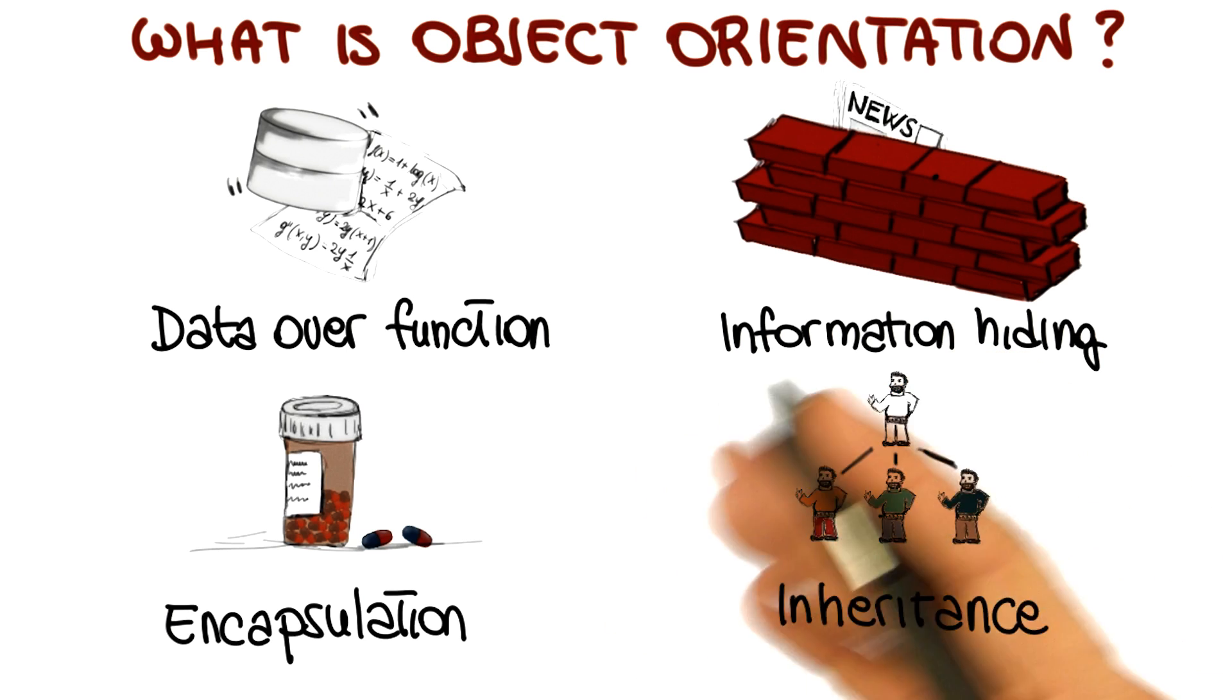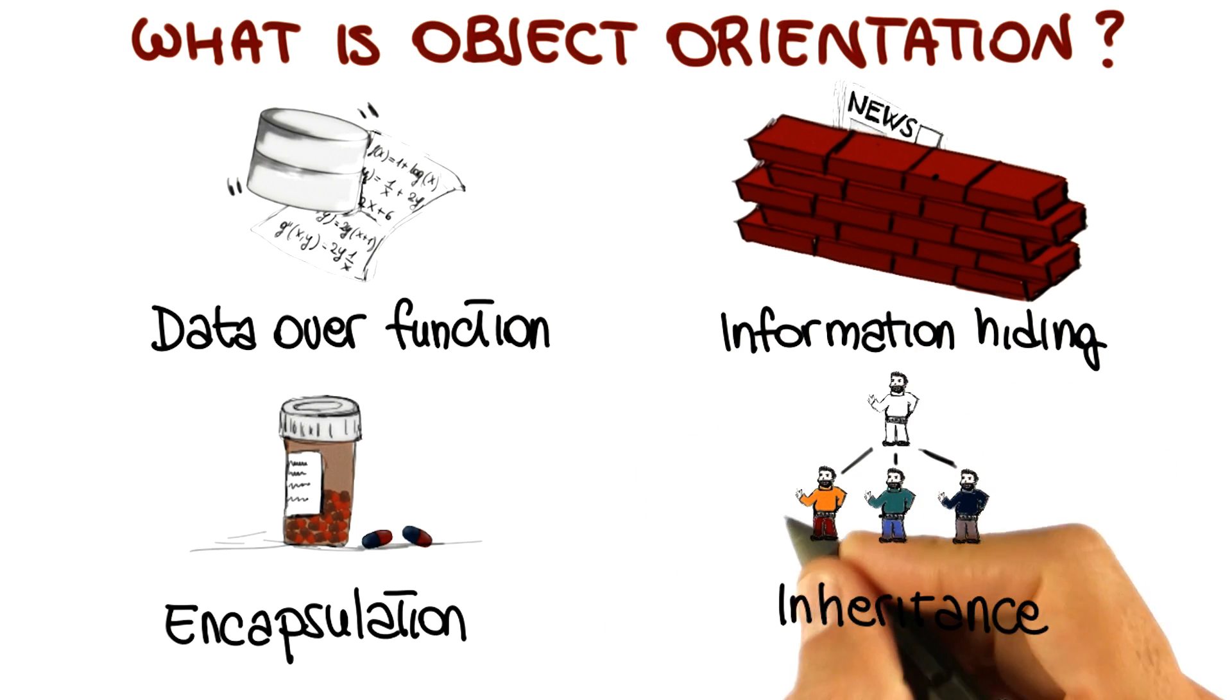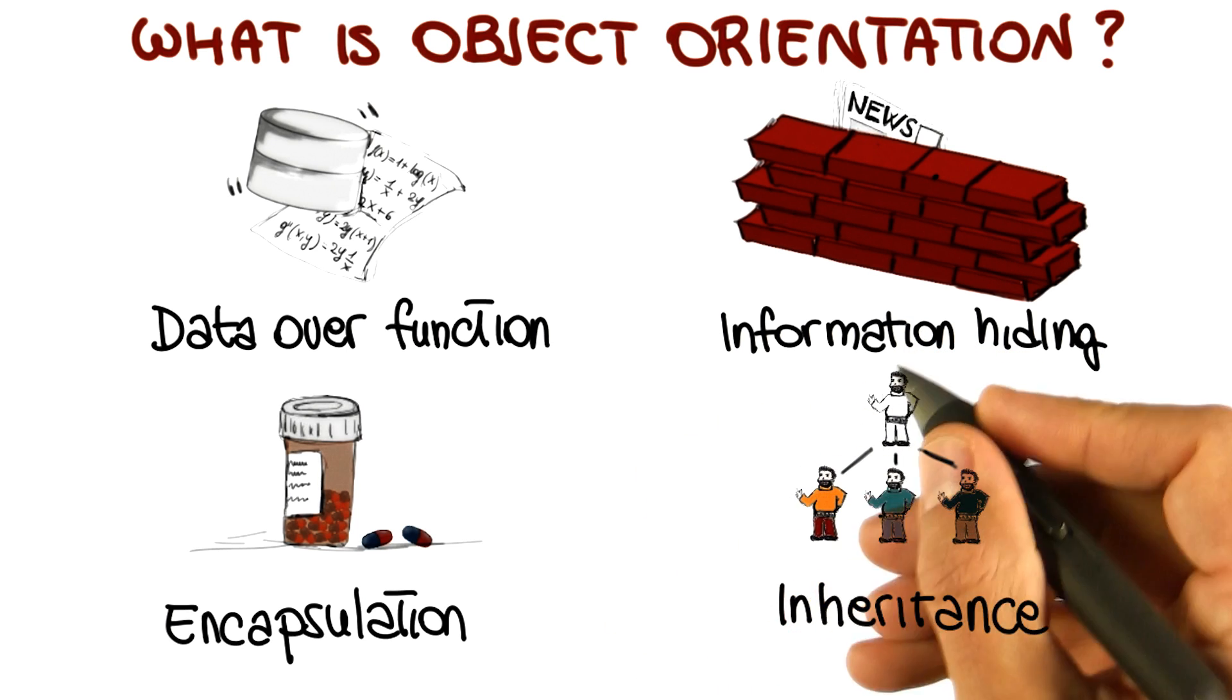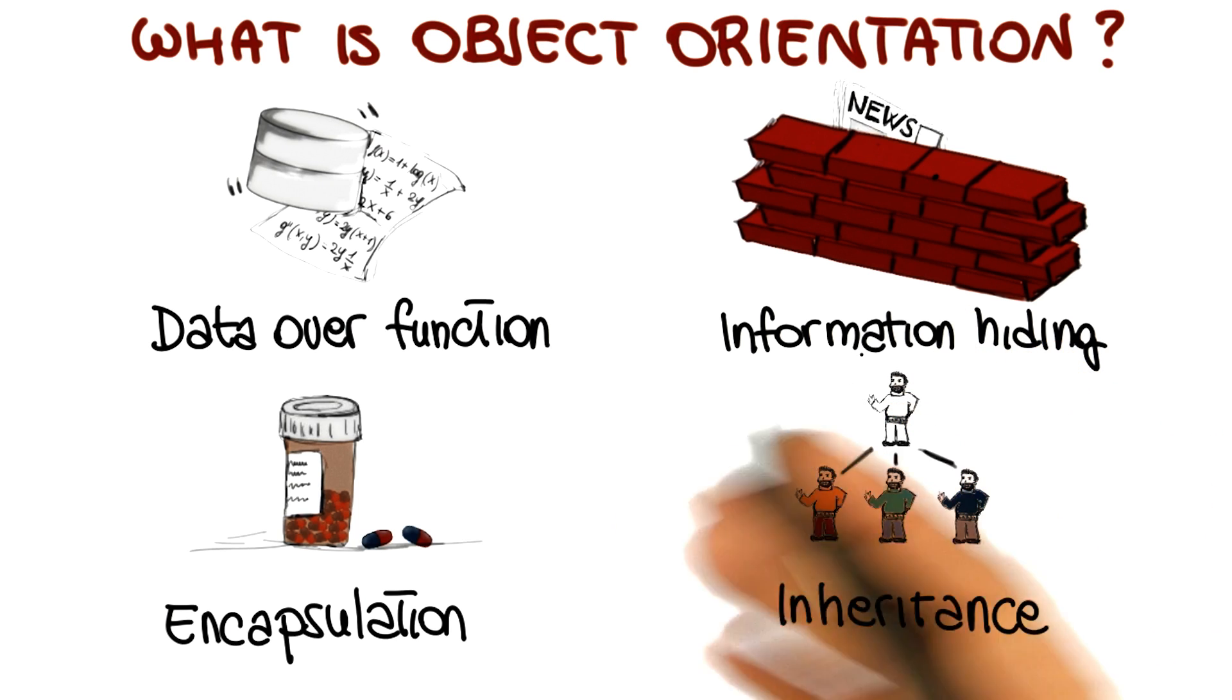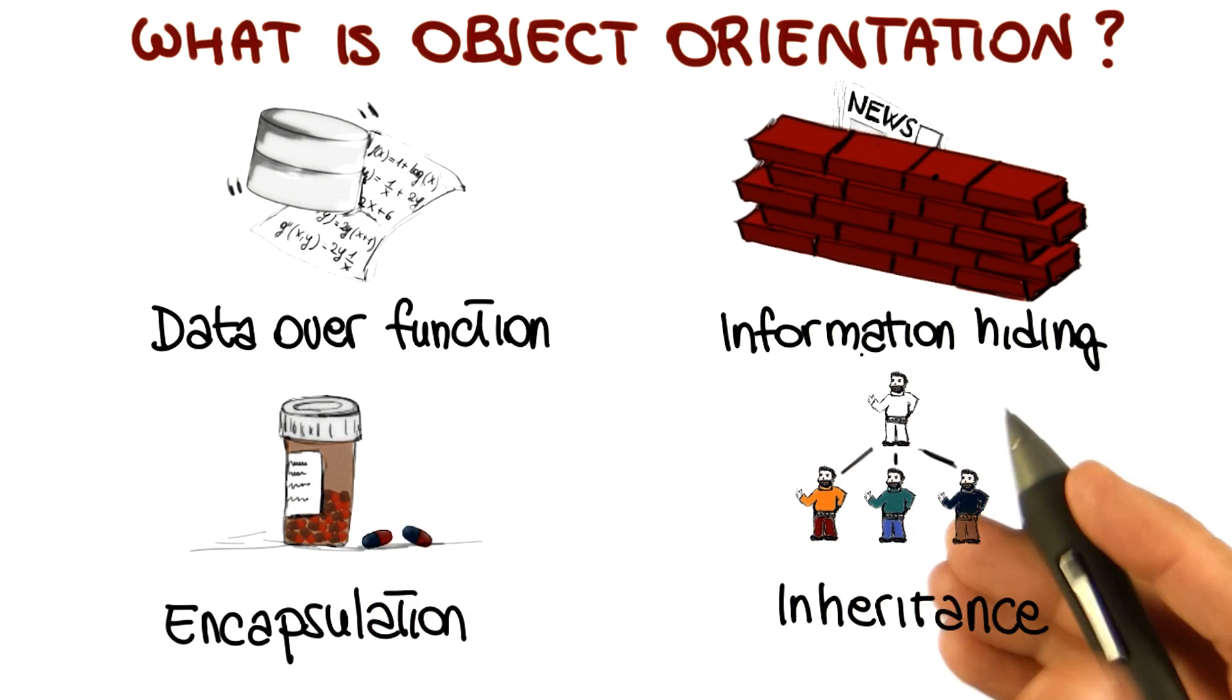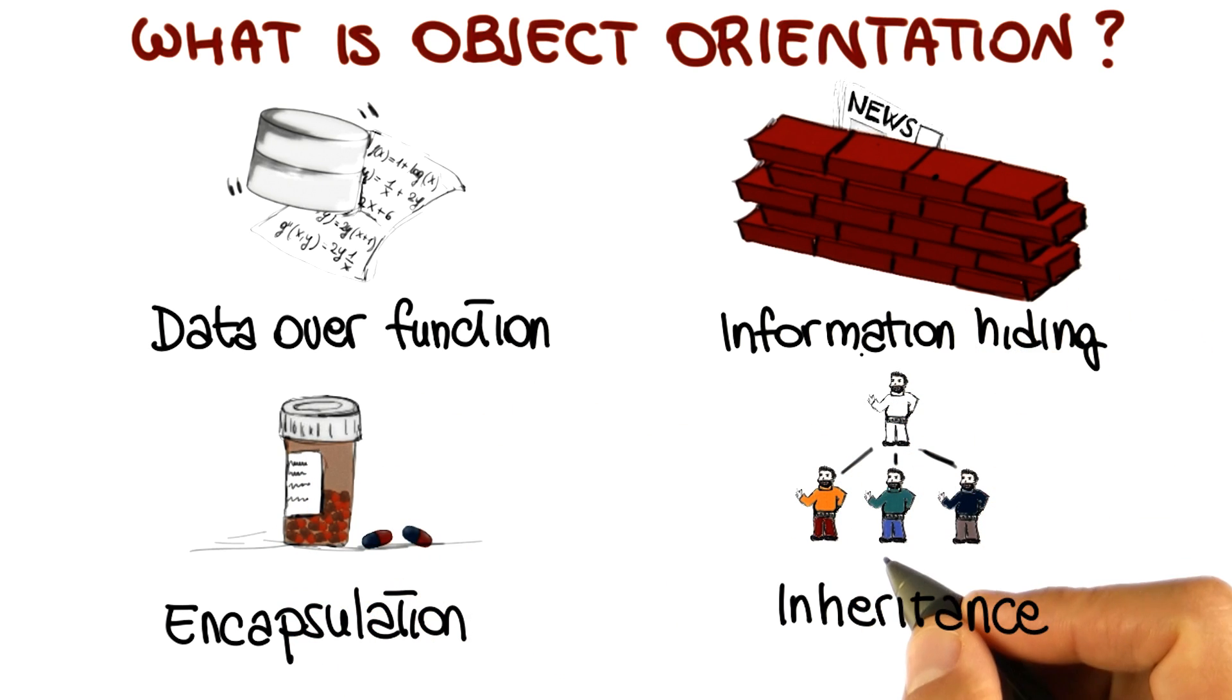And we could continue this discussion for a very long time because there's so many things that could be discussed when we talk about object orientation, its characteristics and its advantages. But in the interest of time, let's for now just stop here and start talking about two key concepts in object orientation.